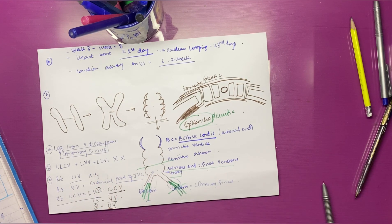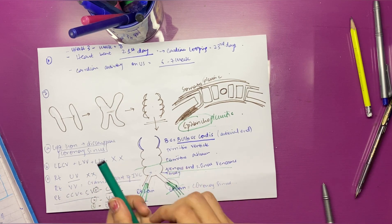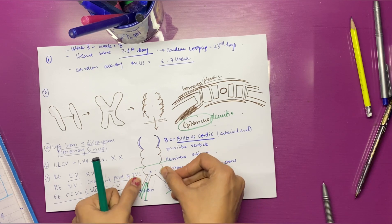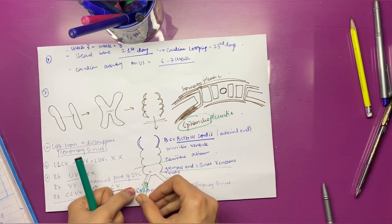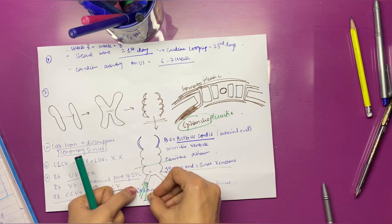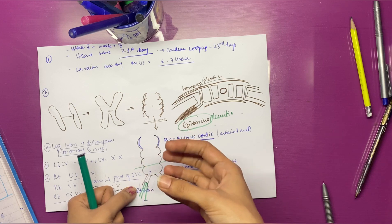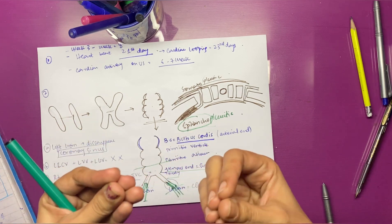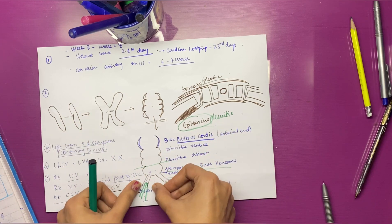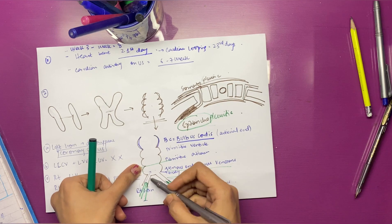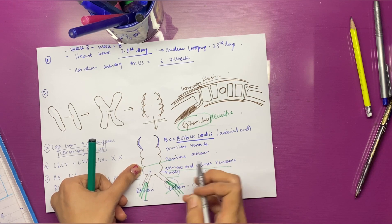What happens to the body of sinus venosus? We're going to understand that with the primitive atrium. What happens with the right atrium? The right horn gets incorporated, and what happens with the common cardinal vein on the right side and the vitelline which converted to superior and inferior vena cava—both are incorporated with the sinus venosus.